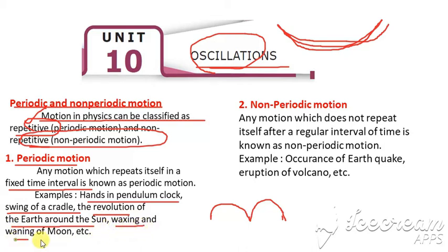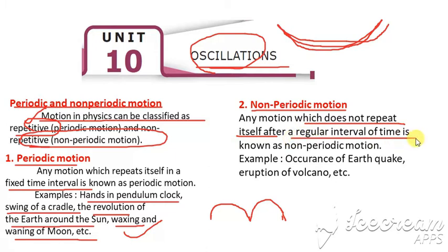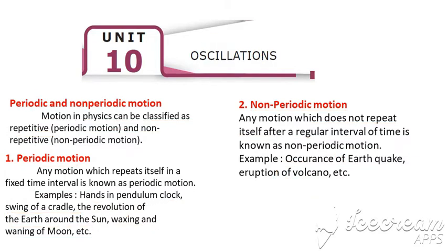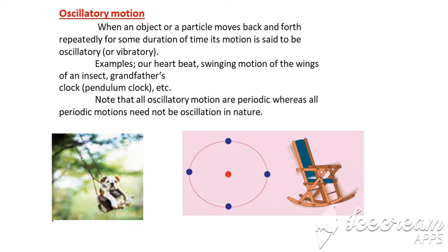Waxing and waning of the moon are also examples of periodic motion. Non-periodic motion does not repeat itself after a regular interval of time. Examples of non-periodic motion include earthquakes and volcanoes, as these do not repeat at regular intervals.